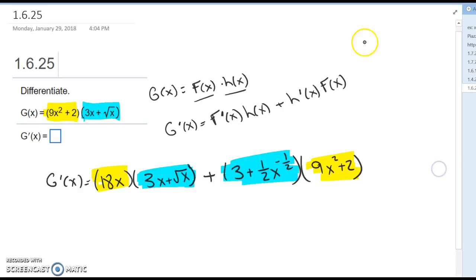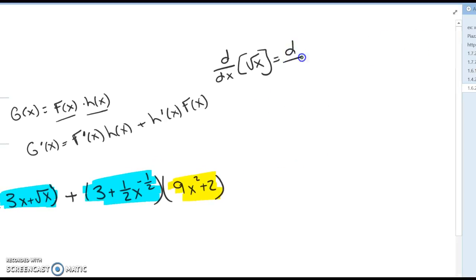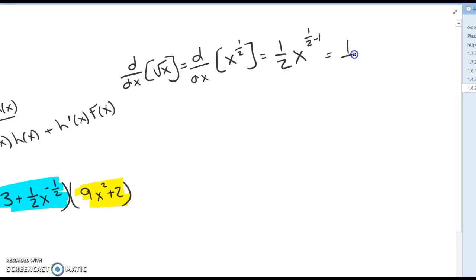So a lot of students get confused on the derivative with respect to x of the square root of x. That can be written as the derivative with respect to x of x to the 1 half, which is the power rule, 1 half minus 1, which is x to the minus 1 half, which could be written as 1 over 2 square root of x.